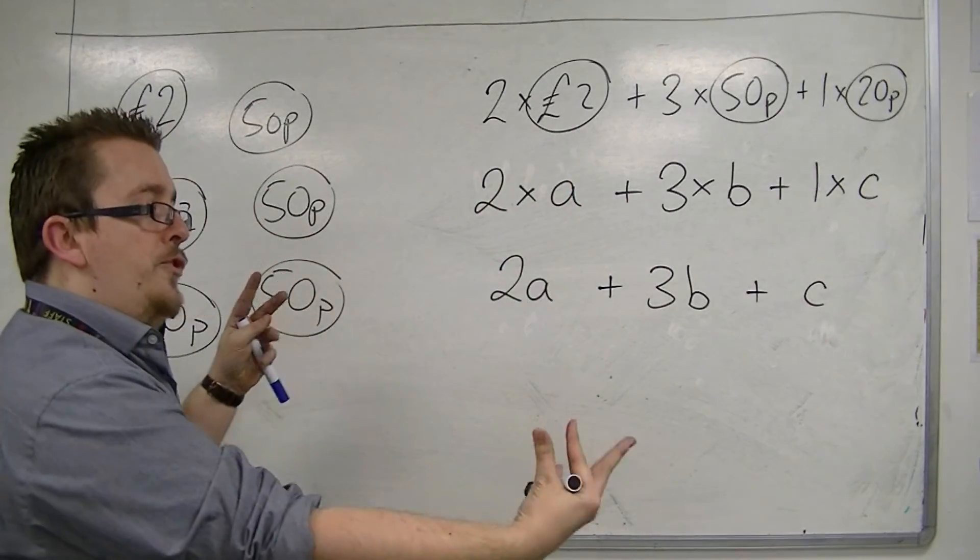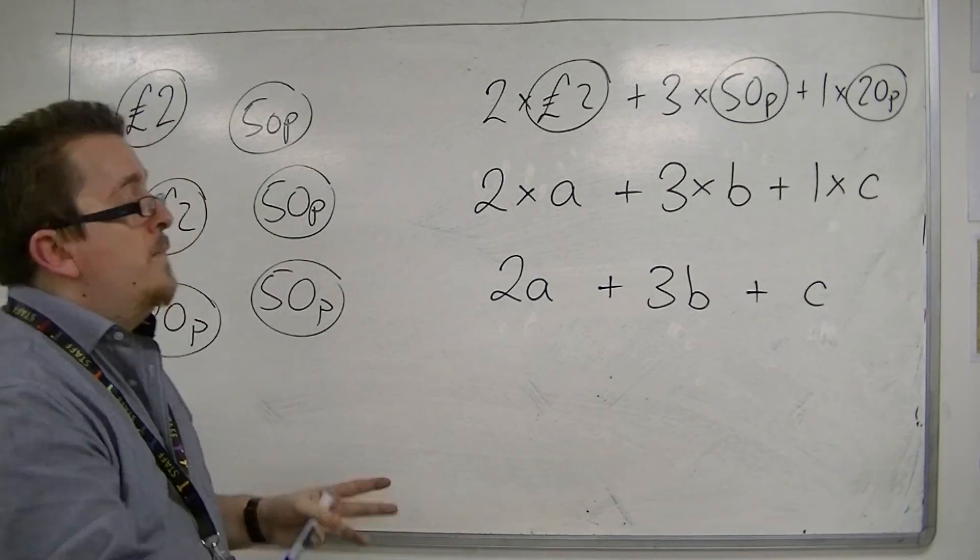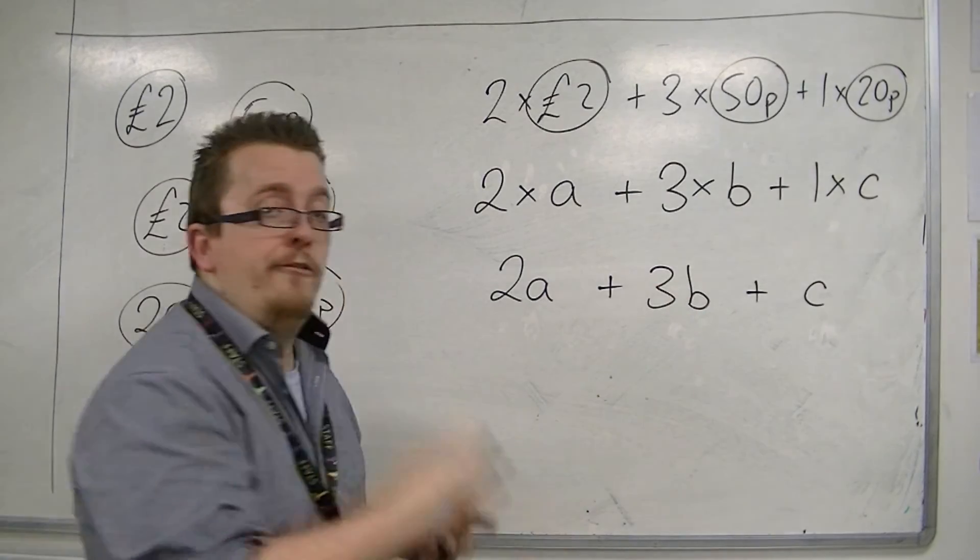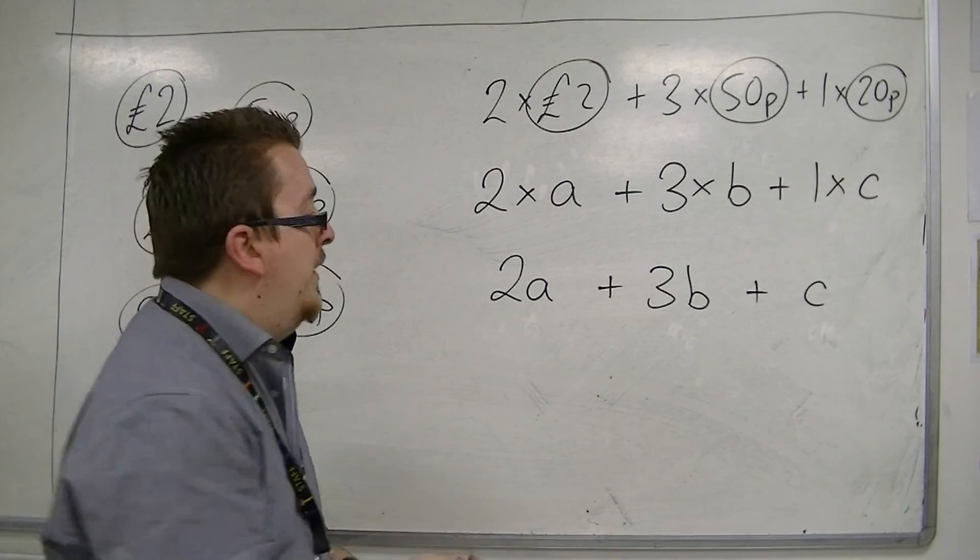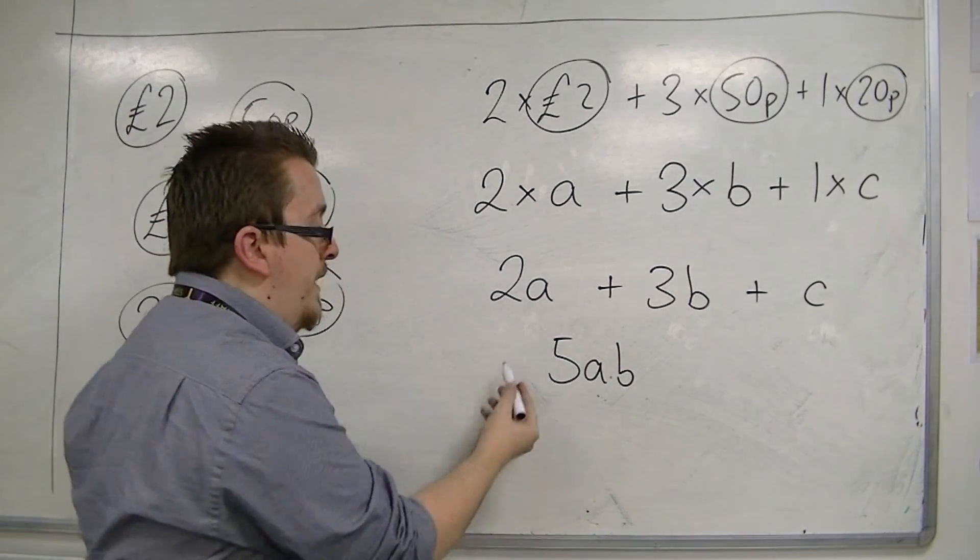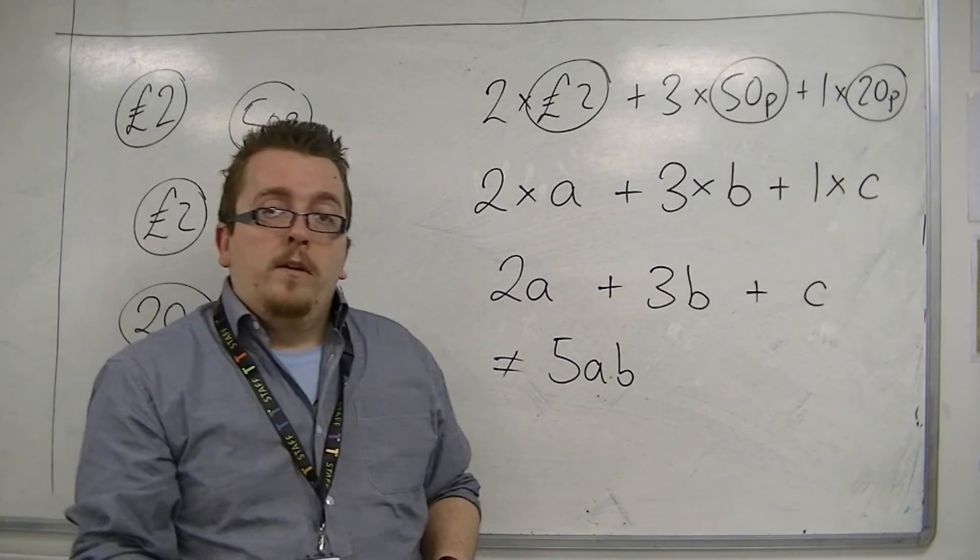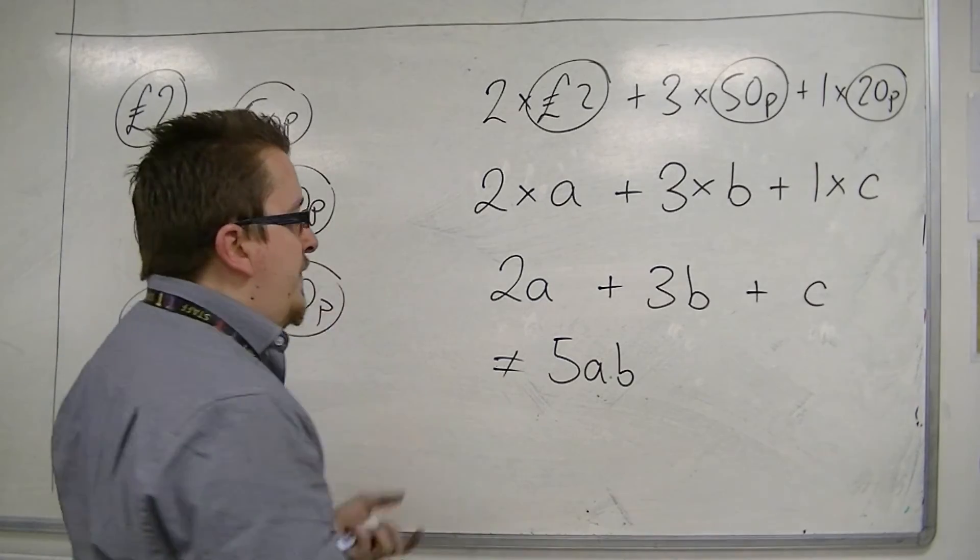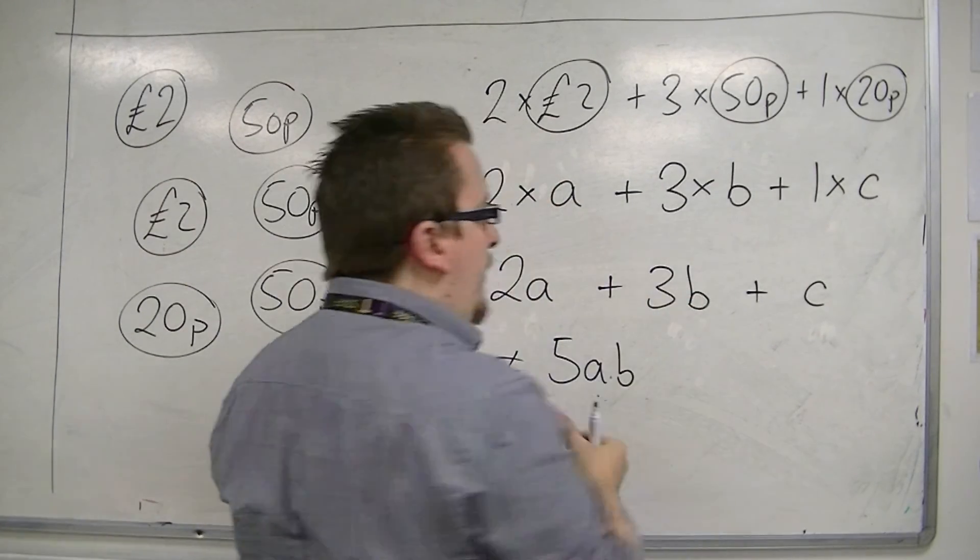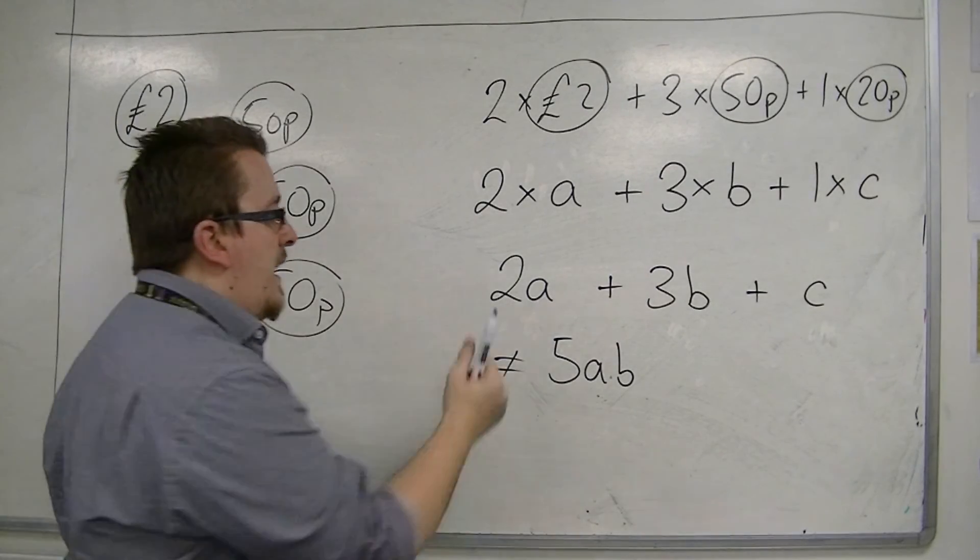So, I am not able to join them together in any way. I can't say, if I've got two pounds and three Euros, I can't then have five pound Euros. So, I can't then say that I've got five AB, for example, from this. That wouldn't make any sense. I would have to have a pile of pounds and a pile of Euros separately. I'm not going to mix them together.